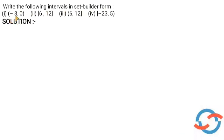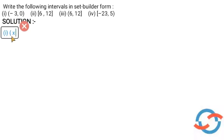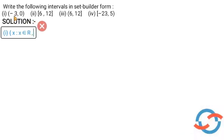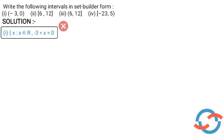The first question is: interval minus 3 to 0. What set builder form is this process open? This is x — the set of all x such that x belongs to real numbers R. This is the property: minus 3 to 0 with open brackets, so minus 3 and 0 are not included. We write: minus 3 is less than x, less than 0. So this is our answer.